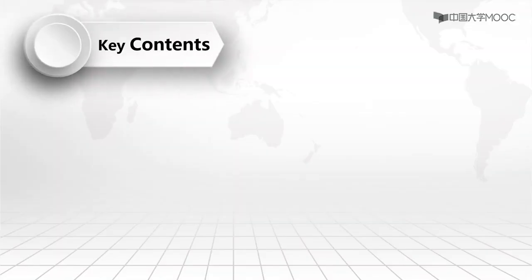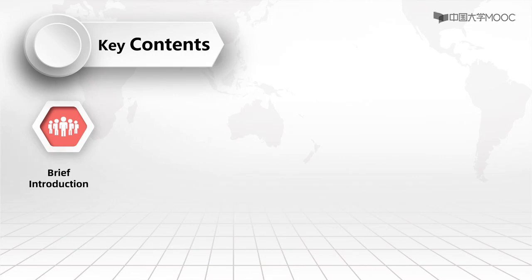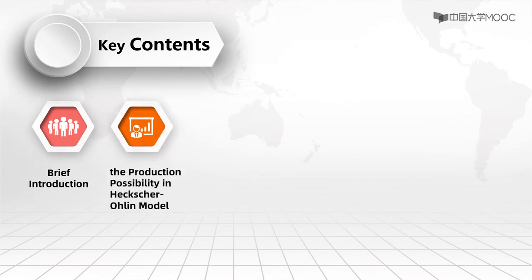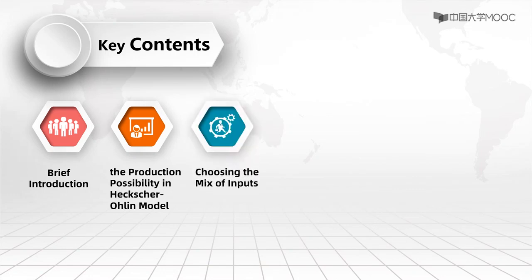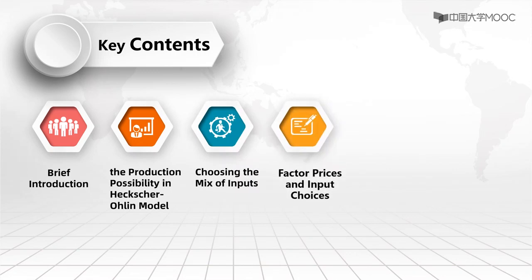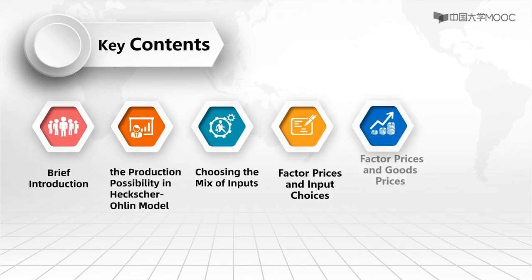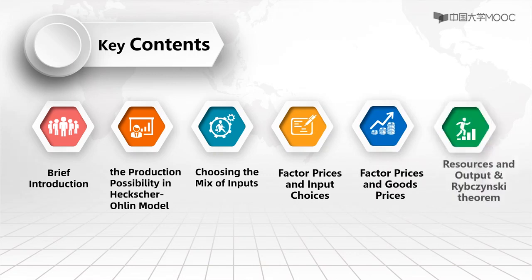Classmates, today we will study the H-O model, focusing on the following issues. First, brief introduction. Second, the production possibility in two-factor H-O model. Third, choosing the mix of inputs. Fourth, factor prices and input choices. Fifth, factor prices and good prices. Sixth, resources and output, and the Rybczynski theorem.